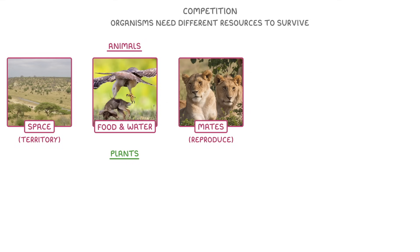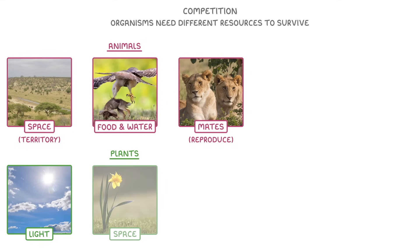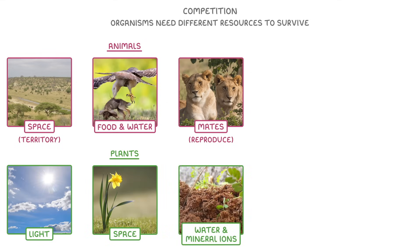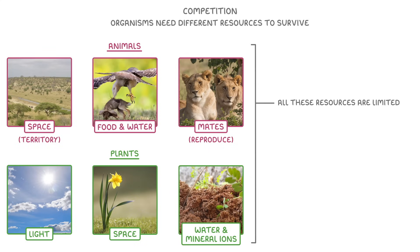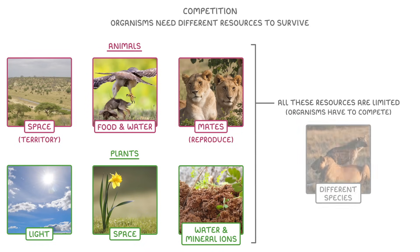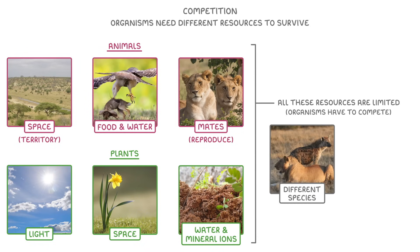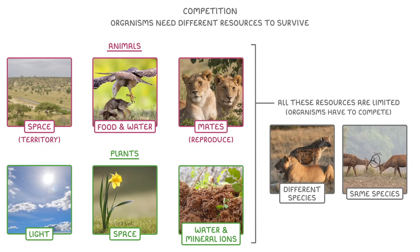Meanwhile, plants need things like light, space, and water and mineral ions, which they get from the soil. The problem is that all of these resources are limited, so to make sure they get enough of them, organisms have to compete with each other. This competition might be between organisms of different species, like when lions and hyenas compete for a wildebeest, or between organisms of the same species, such as when male deer compete with each other for females.